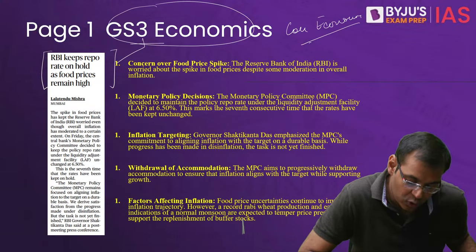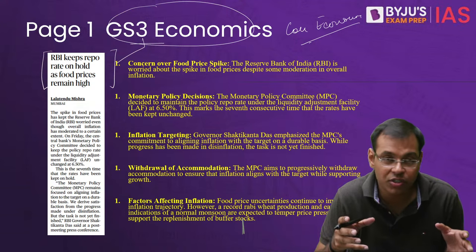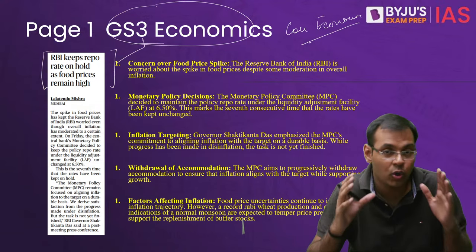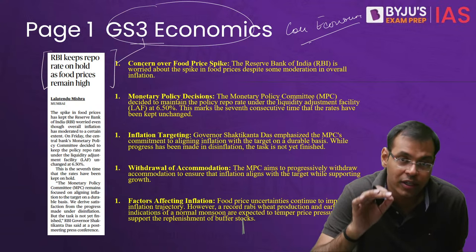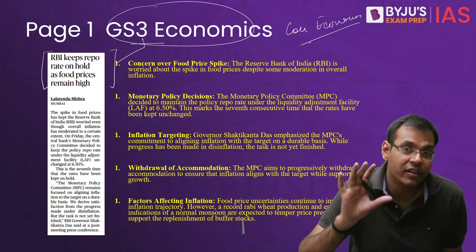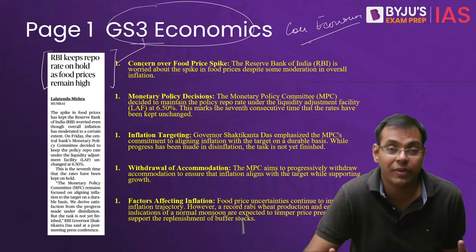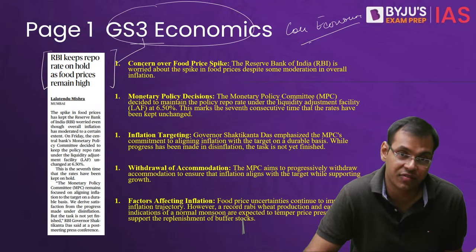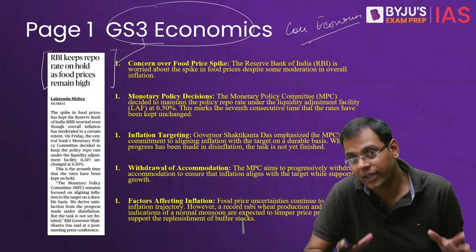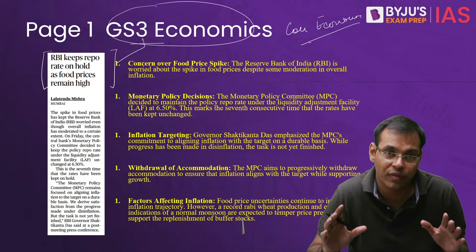RBI keeps the repo rate on hold as food prices remain high. Food prices are high because of transportation costs, lack of supply, shortage of food articles, and excessive demand. More than RBI, the government should have acted, because elections are about to start. What actions have been taken by the Government of India to reduce food inflation? None whatsoever.